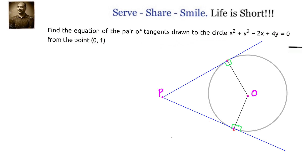We have to find out the equation of the pair of tangents drawn to the given circle from a specific point. The circle equation is x² + y² - 2x + 4y = 0, and the point is (0, 1).